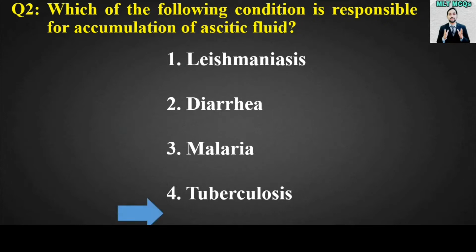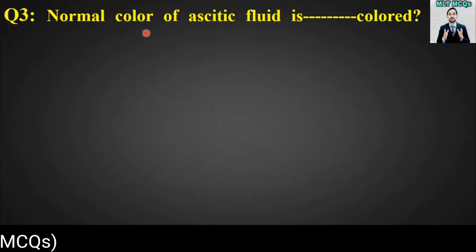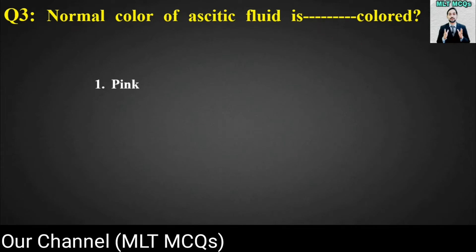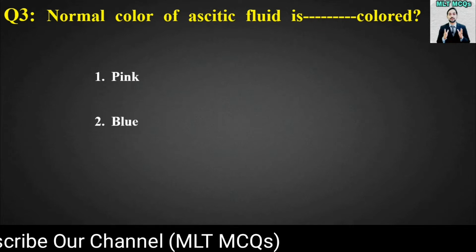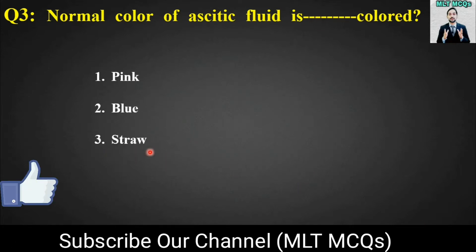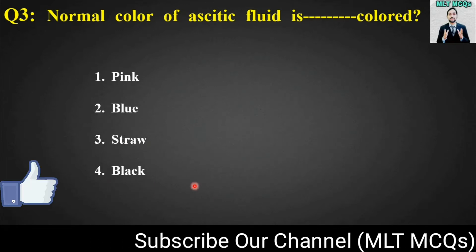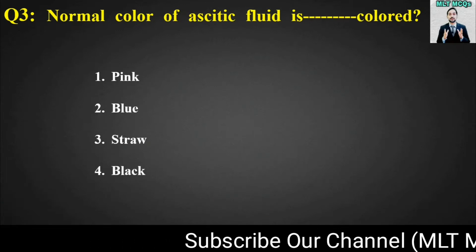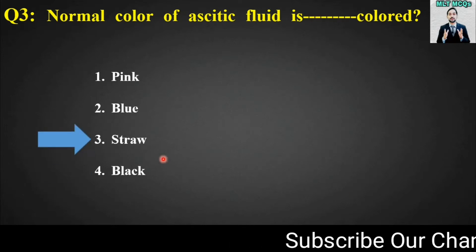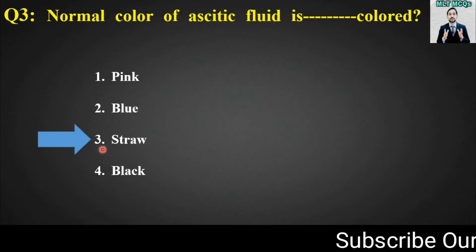The right answer for this MCQ is option number four: tuberculosis. MCQ number three is: normal color of ascitic fluid is blank colored. Options are: pink, blue, straw, or black. The right answer for this MCQ is option number three: straw.